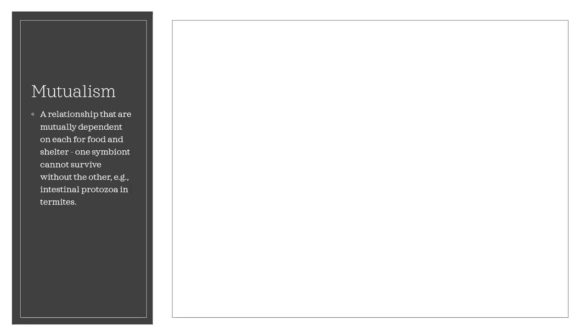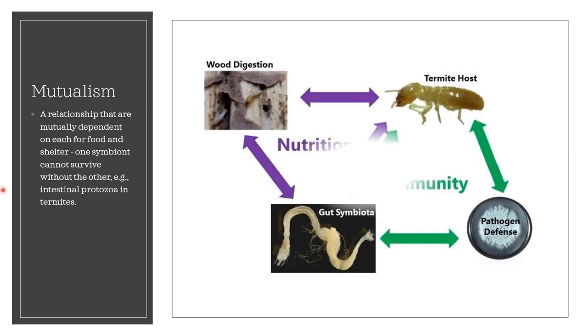Another type of symbiotic relationship is mutualism. It is defined as a relationship where organisms are mutually dependent on each other for food and shelter — one cannot survive without the other. An example of this is the relationship between the gut symbiota, intestinal protozoa, located in the gut of termites.